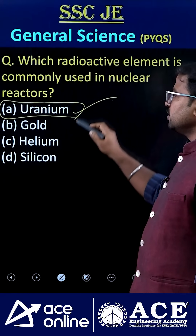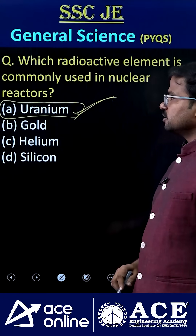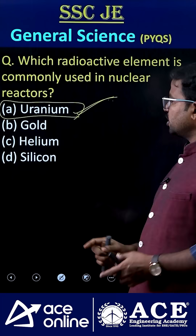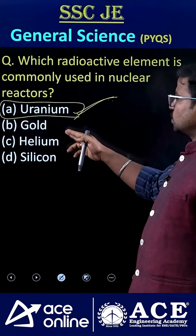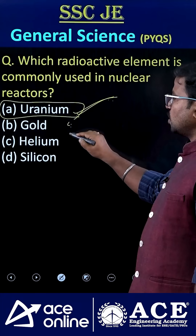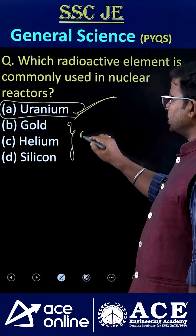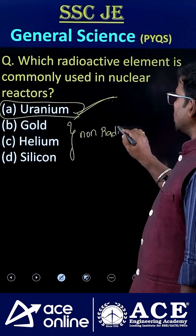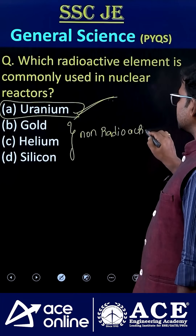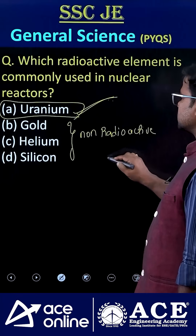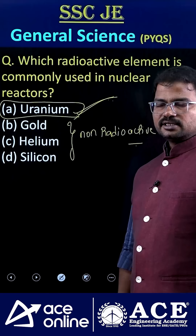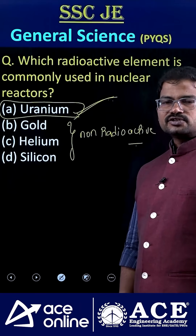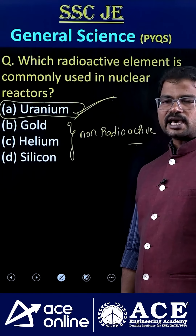So here the correct answer is option A — uranium. This is a radioactive element by using which we can make fuel rods. Gold, helium, and silicon are non-radioactive elements.